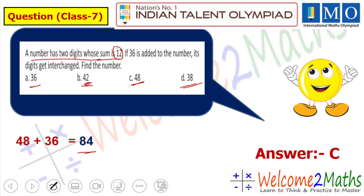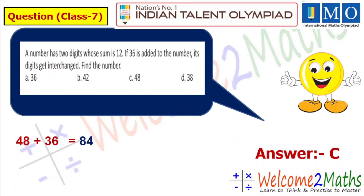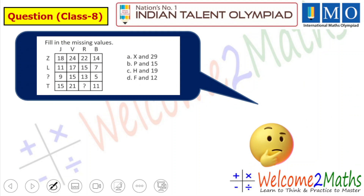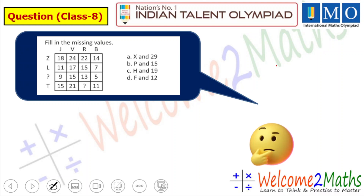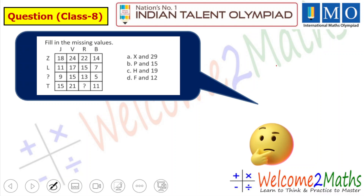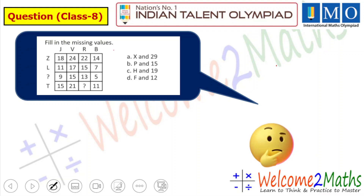Now let us move on and solve one more question from class 8. It is a very interesting question — you have to find out the missing values. You can see there are boxes with rows and columns, and some pattern is followed. Whenever you find out the pattern, you can easily find out the answer.